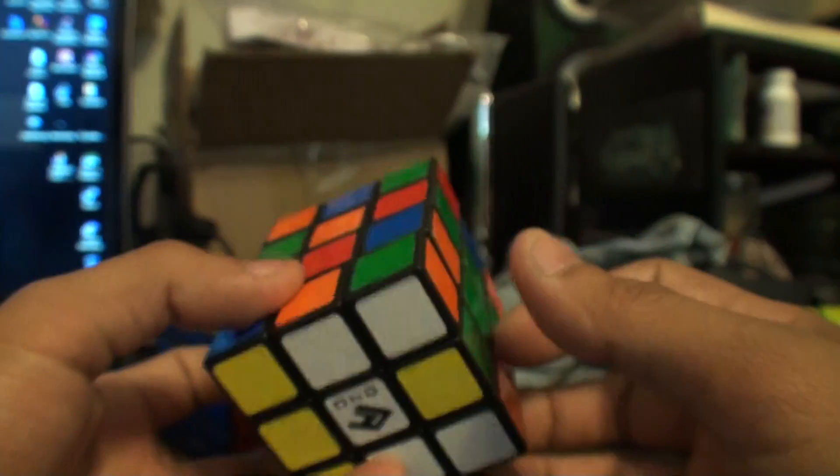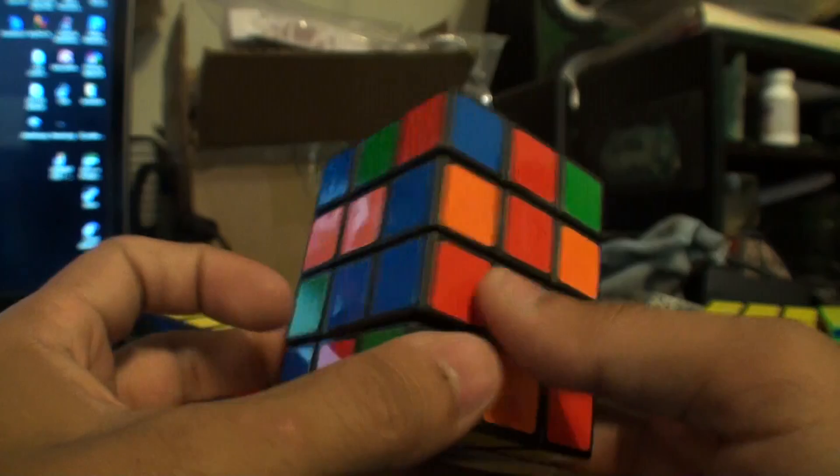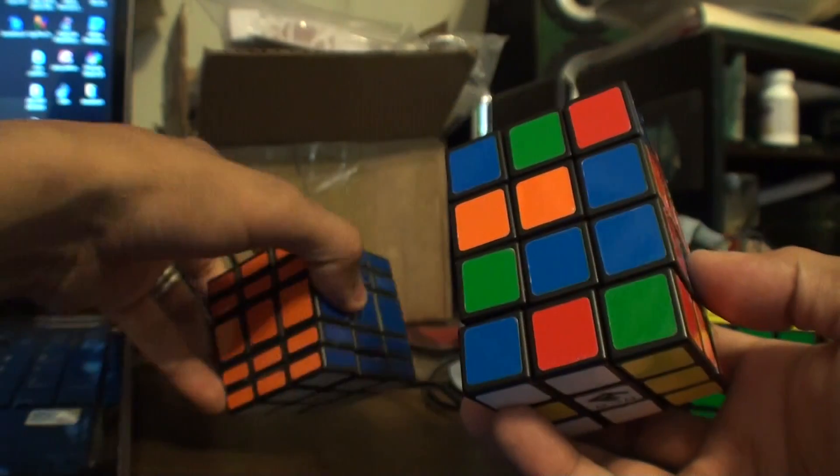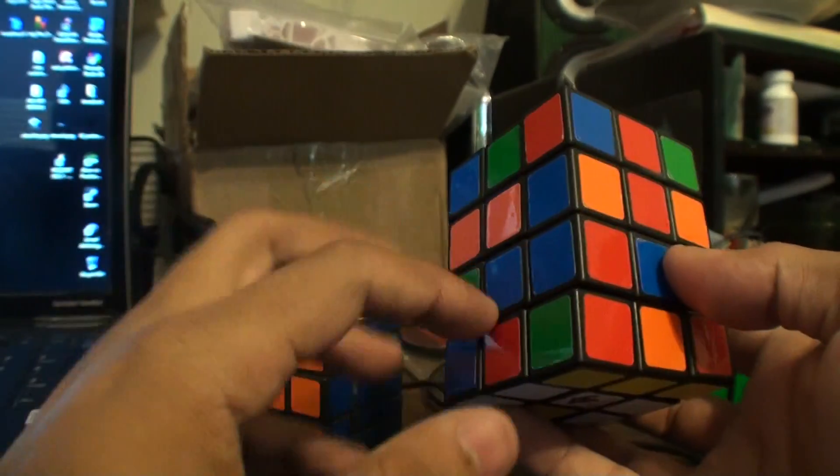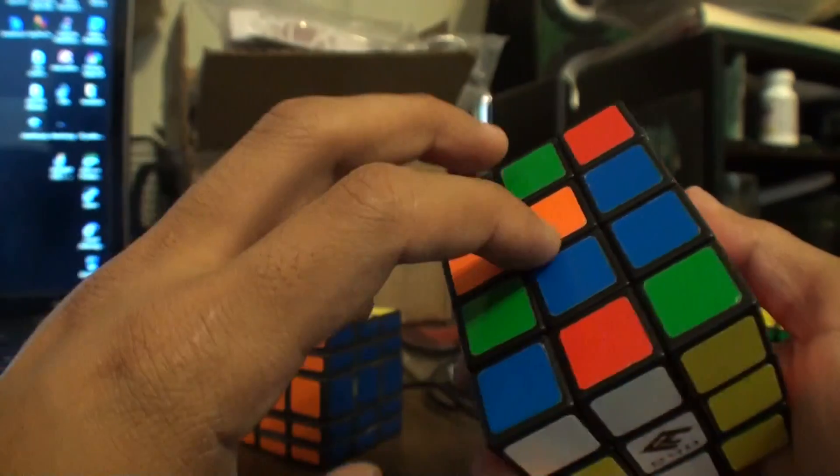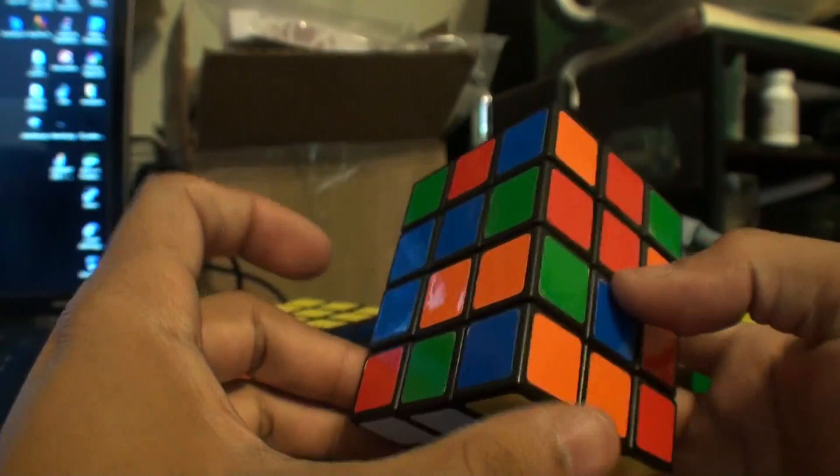Okay, so now you're going to try and find your cross on the bottom here. You know from your normal color scheme that orange is on the left of blue. So you're going to bring down this orange up here and you're going to have your orange.